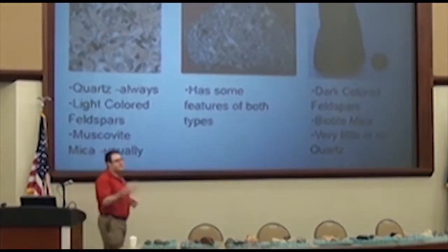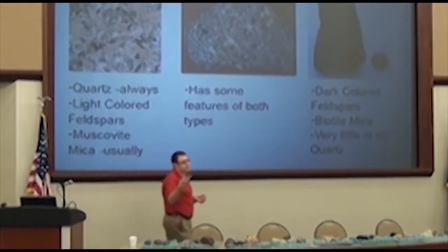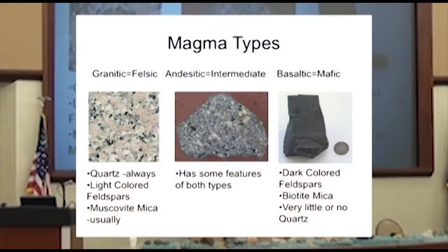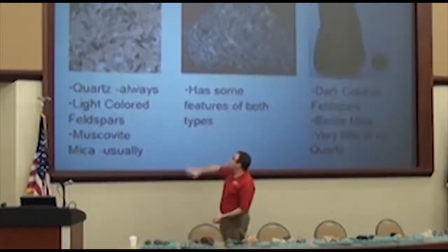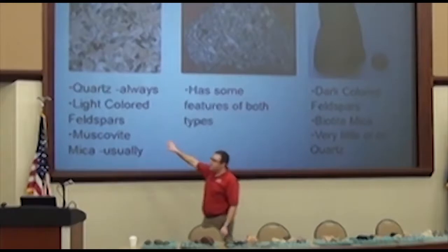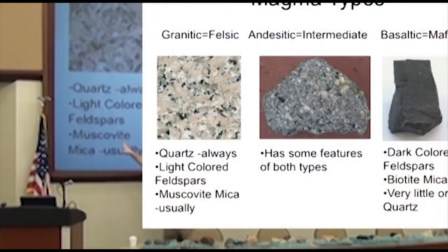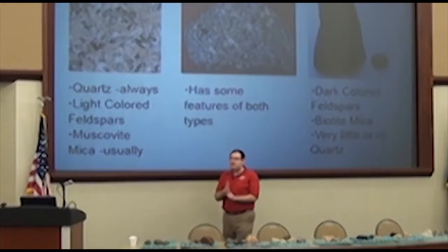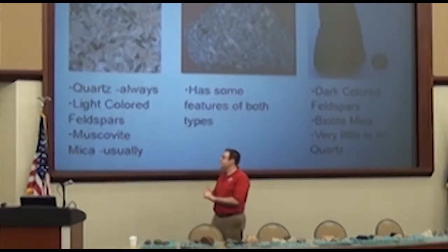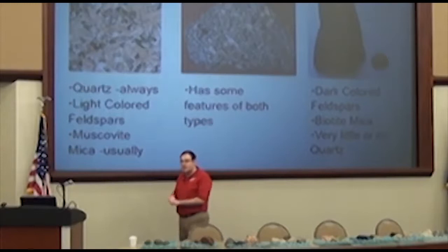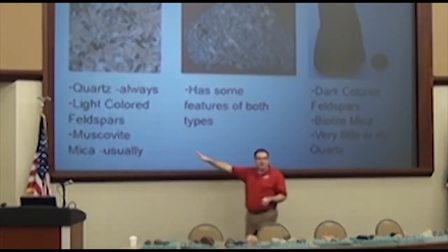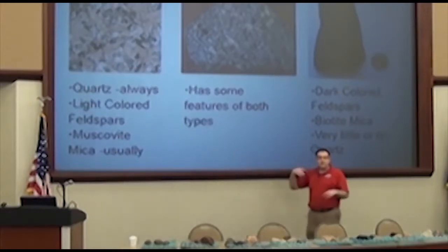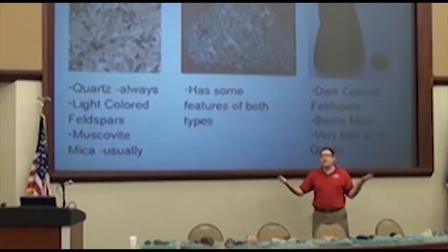These magma types, we break them down into three different groups. When they're light colored, we call that granitic or felsic magma — both terms you should know. These light colored rocks almost all have quartz, feldspars, and mica in them. Granitic — does that sound like any rock anybody's ever heard of? Granite, right — granite is like the perfect granitic rock. On the other side of the spectrum we've got dark magmas — these are basaltic magmas, or mafic. Mafic and basaltic are the same thing.